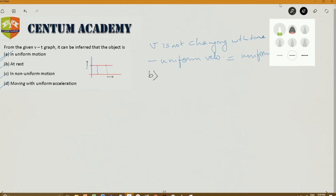If you see, this is T and this is V. At rest means body is at rest, so velocity must be 0.